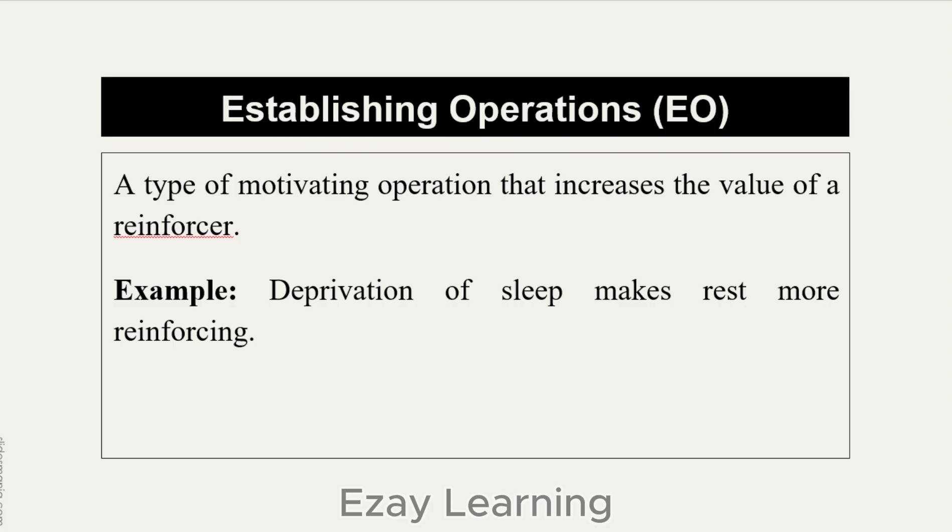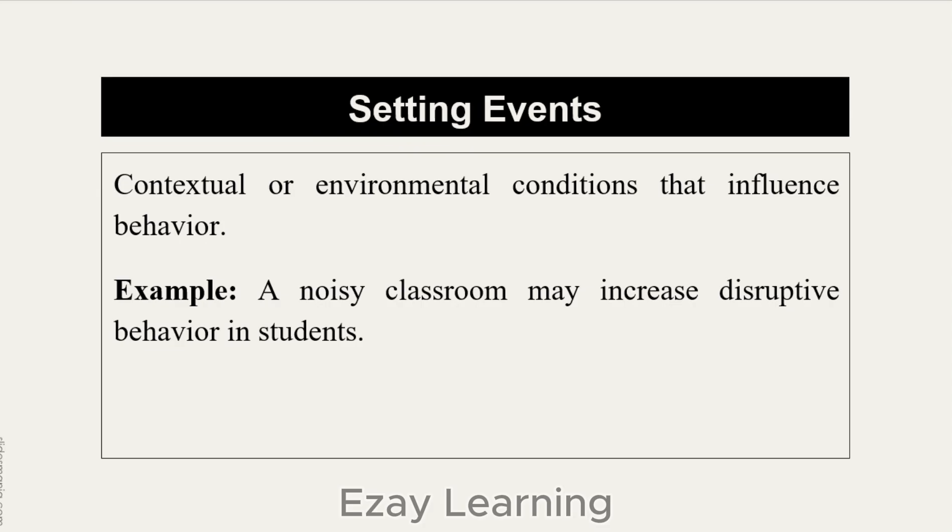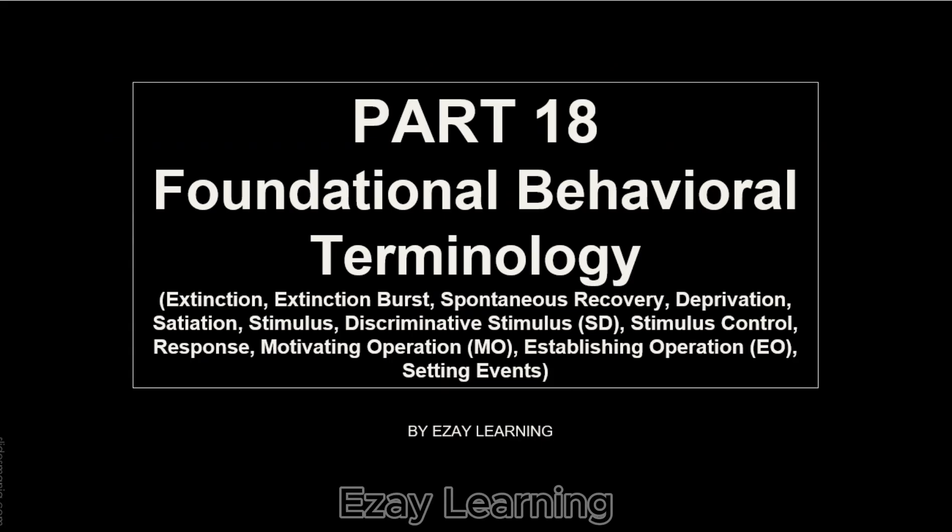Motivating operations have two categories: establishing operations and abolishing operations. Establishing operations are the type of motivating operation that increases the value of a reinforcer. An example of an establishing operation includes deprivation of sleep, which makes rest more reinforcing. Setting events are contextual or environmental conditions that influence behavior — they can also refer to antecedents, the events that are influencing the behavior. For example, a noisy classroom may increase disruptive behavior in students.